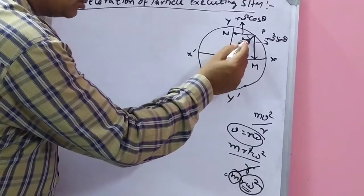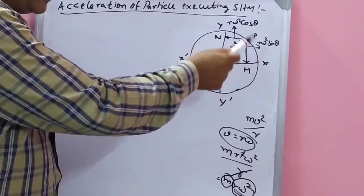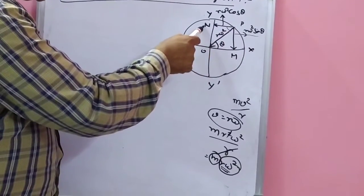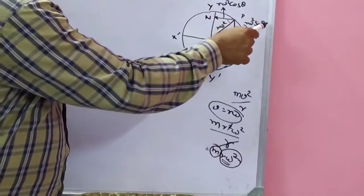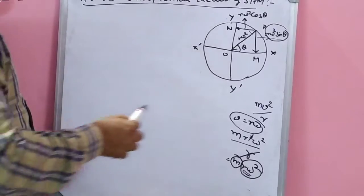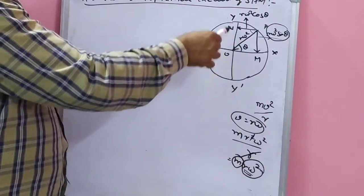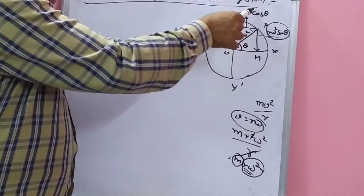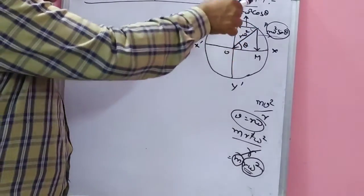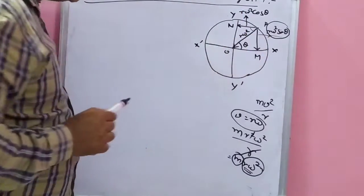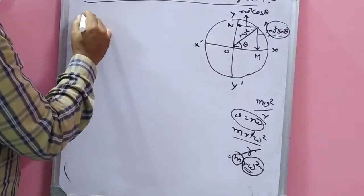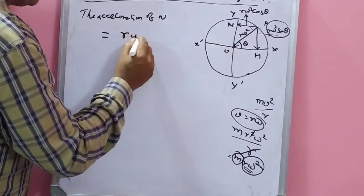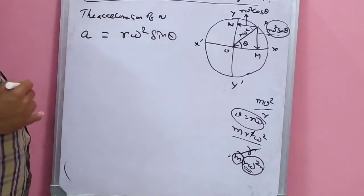Since the angle is θ, r·ω² can be resolved into two components: r·ω²·sinθ along PM, and r·ω²·cosθ along PN. We are going to use only r·ω²·sinθ, because we want to find the acceleration of N along the vertical direction yy'. The component acting along yy' is r·ω²·sinθ, so the acceleration of N equals r·ω²·sinθ.